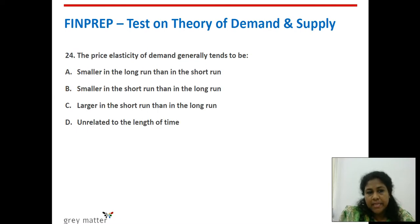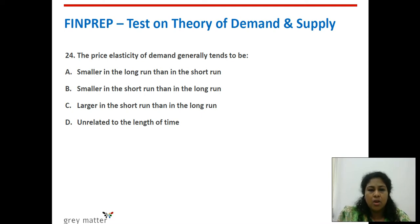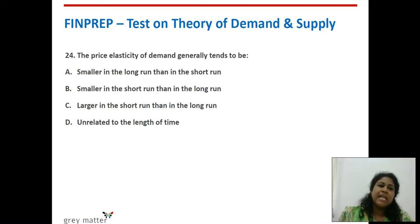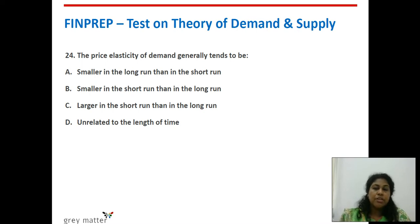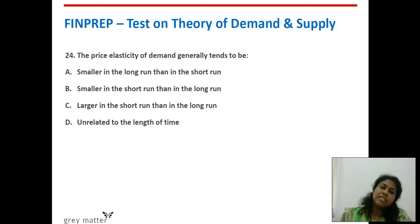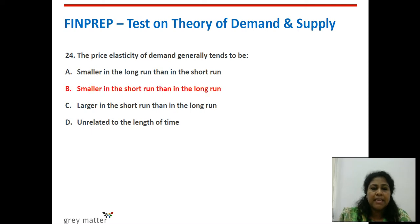Twenty-fourth question: the price elasticity of demand generally tends to be what? Options: smaller in the long run than in the short run; smaller in the short run than in the long run; larger in the short run than in the long run; unrelated to the length of time. As mentioned earlier, lesser the time period, lesser the response to price changes. Greater the time period, more scope to respond. Larger the time, larger the elasticity; smaller the time, smaller the elasticity. The right answer is option B — smaller in the short run than in the long run.